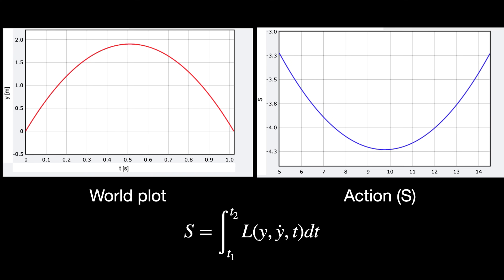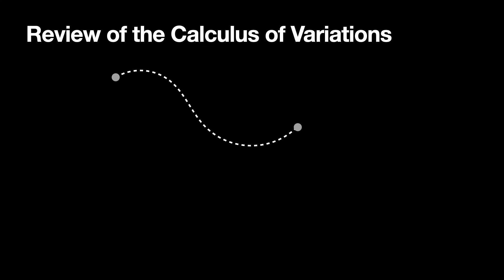We calculate the action as the integral of the Lagrangian dt from T1 to T2. The key is we want to find the function Y that minimizes this integral — not minimize the function itself, but find what function minimizes the integral. This is where we go into the calculus of variations.